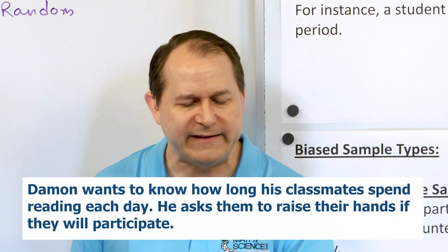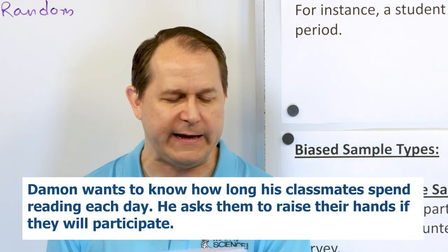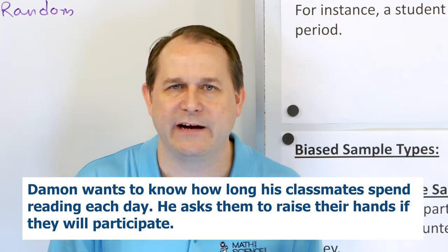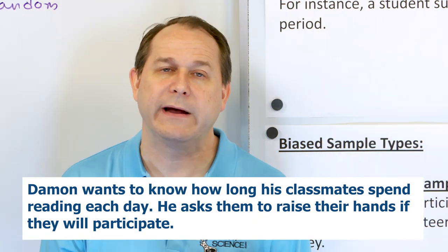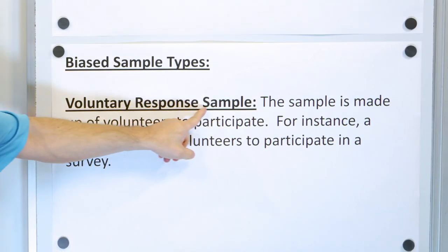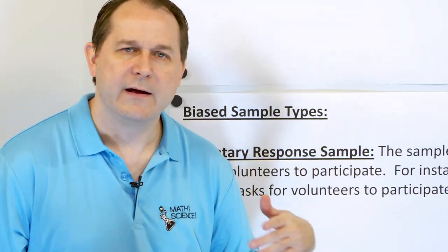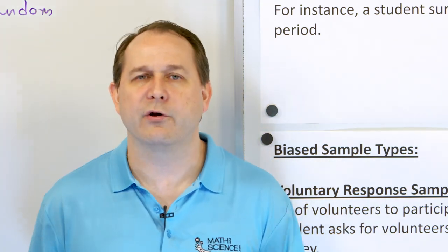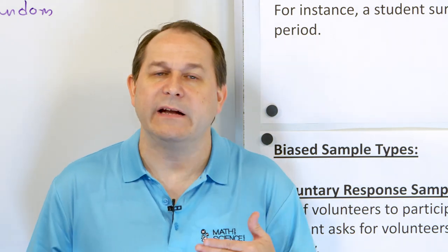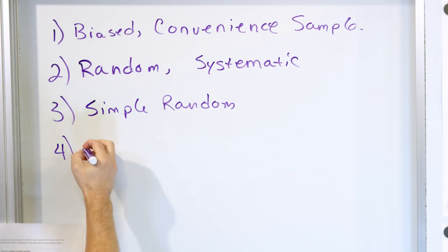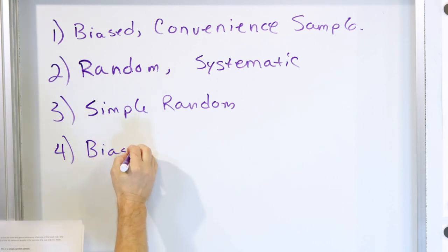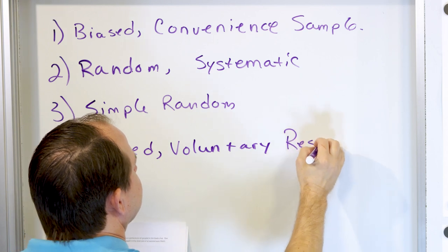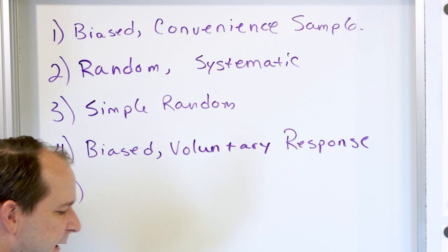Problem four: Damon wants to know how long his classmates spend reading each day. He asks the students in his class to raise their hands if they will participate in the study. You know right away it's a voluntary sample — he's asking people to volunteer. That is biased, and it's a voluntary response sample. Asking for volunteers is generally a bad idea — your results aren't useful because you're only asking people willing to do it, which can introduce biases.